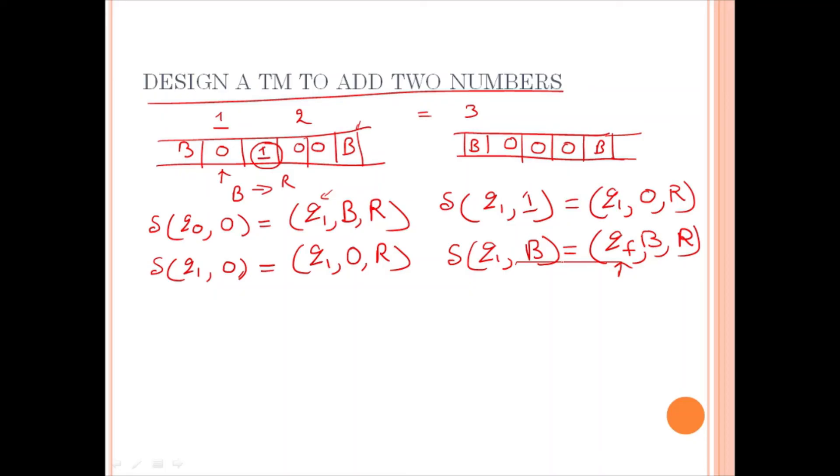So, we can simulate these operations by just seeing the ID configuration. Initial ID will be what? Suppose, b will be there. Initial state is what? q0, 0, 1, 0, 0, b.